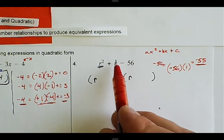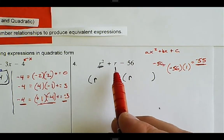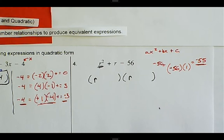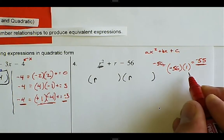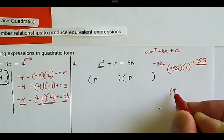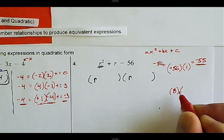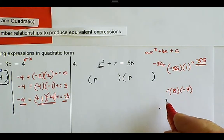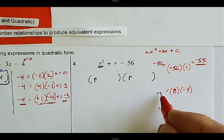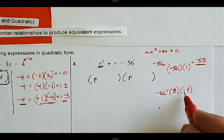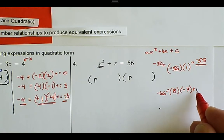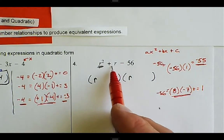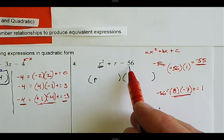When we have such a small coefficient on the middle term, the two numbers that multiply to negative 56 have to be close to each other. Instead of negative 56 and one, I'll try eight and negative seven, because eight times negative seven is negative 56, and eight plus negative seven equals one. That works.